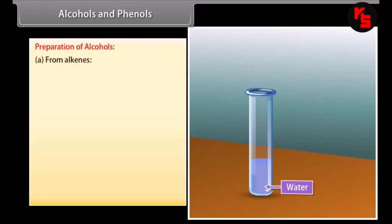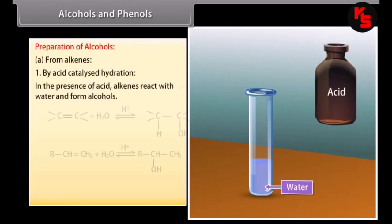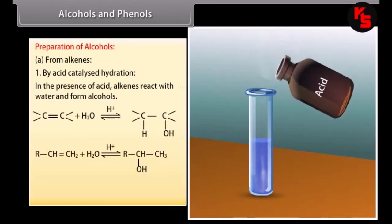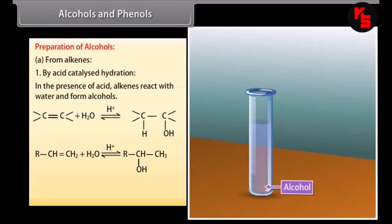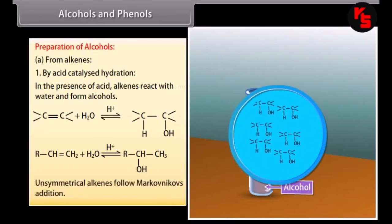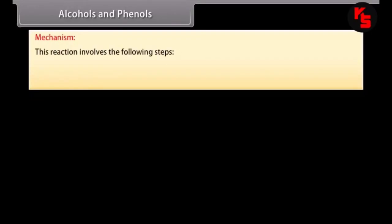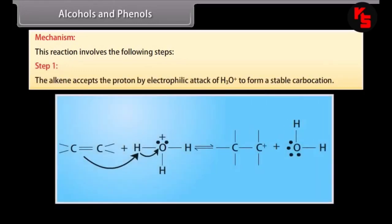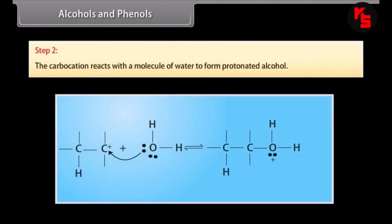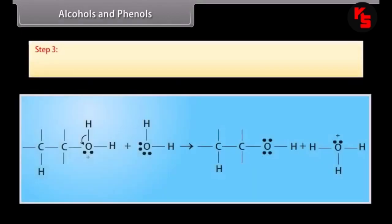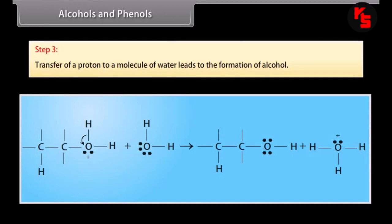Preparation of alcohols from alkenes by acid-catalyzed hydration: in the presence of acid, alkenes react with water to form alcohols. Unsymmetrical alkenes follow Markovnikov's addition. The mechanism involves three steps: Step 1 — the alkene accepts a proton by electrophilic attack of a hydronium ion to form a stable carbocation; Step 2 — the carbocation reacts with a molecule of water to form a protonated alcohol; Step 3 — transfer of a proton to water leads to the formation of alcohol.